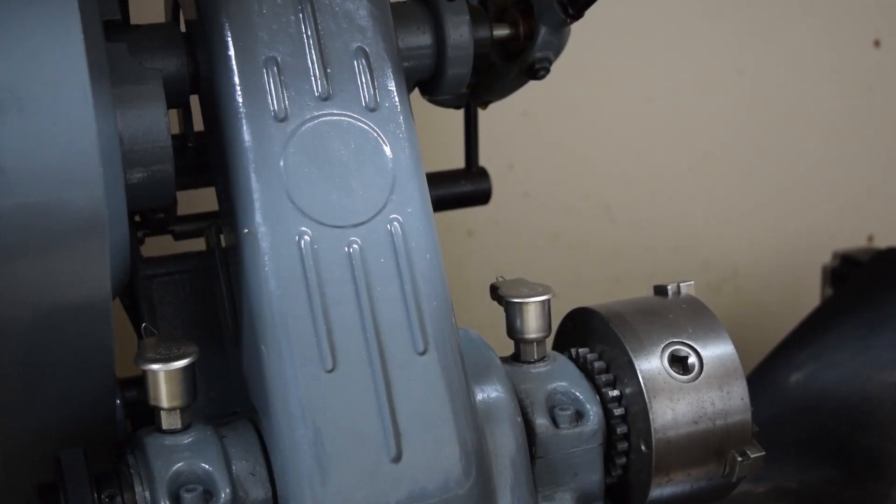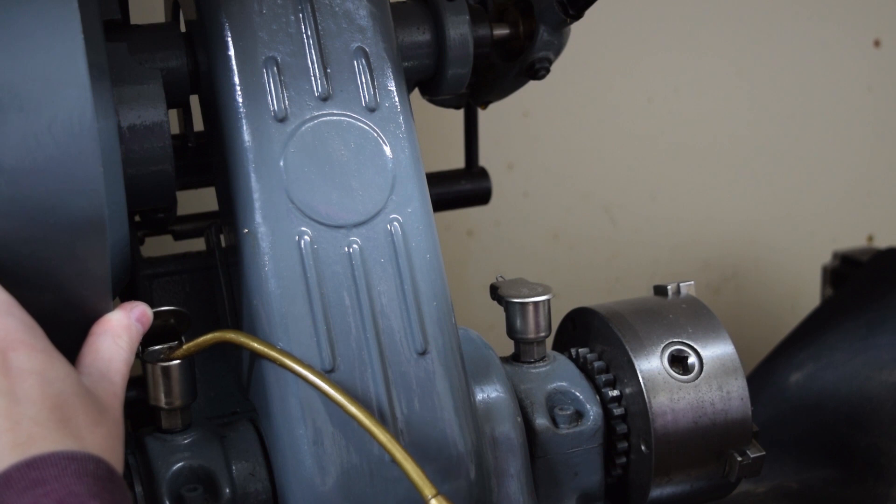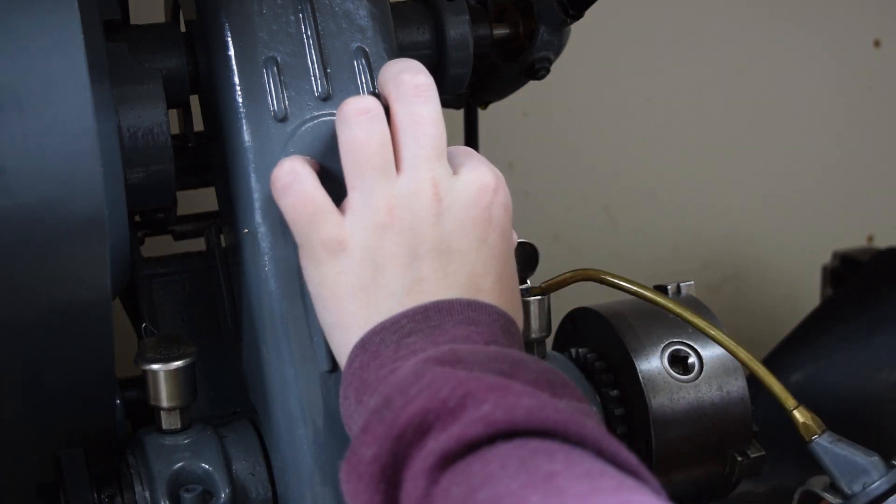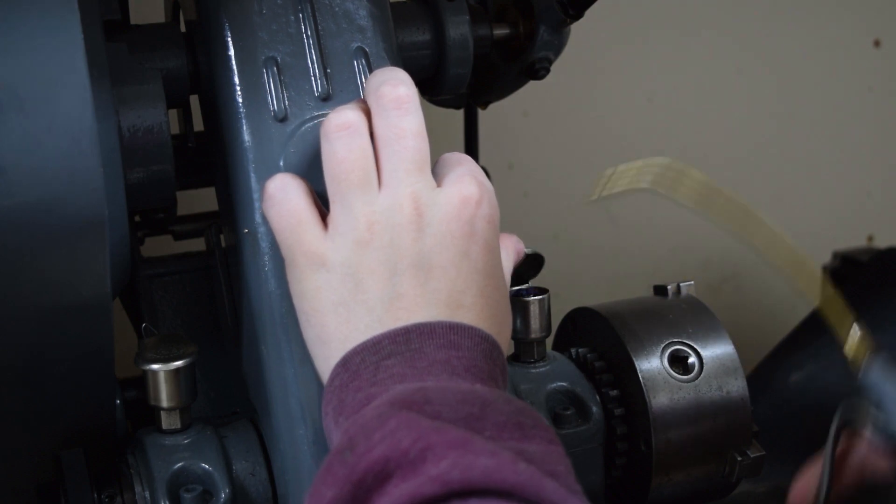I removed the original drip oilers and replaced them with cup oilers. They have a small wick and I find it's much more useful for the work I do. I keep them topped up throughout the running day.